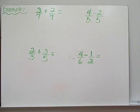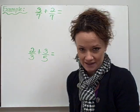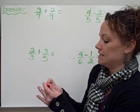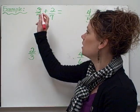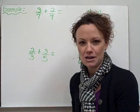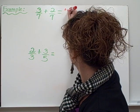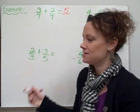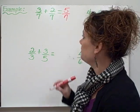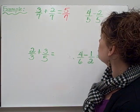Let's get started with some example problems. I have 3 sevenths plus 2 sevenths. If I take a look, my denominators are exactly the same, so I can just go ahead and add up my numerators. So 3 plus 2 equals 5, and my denominator stays exactly the same. So 3 sevenths plus 2 sevenths equals 5 sevenths.